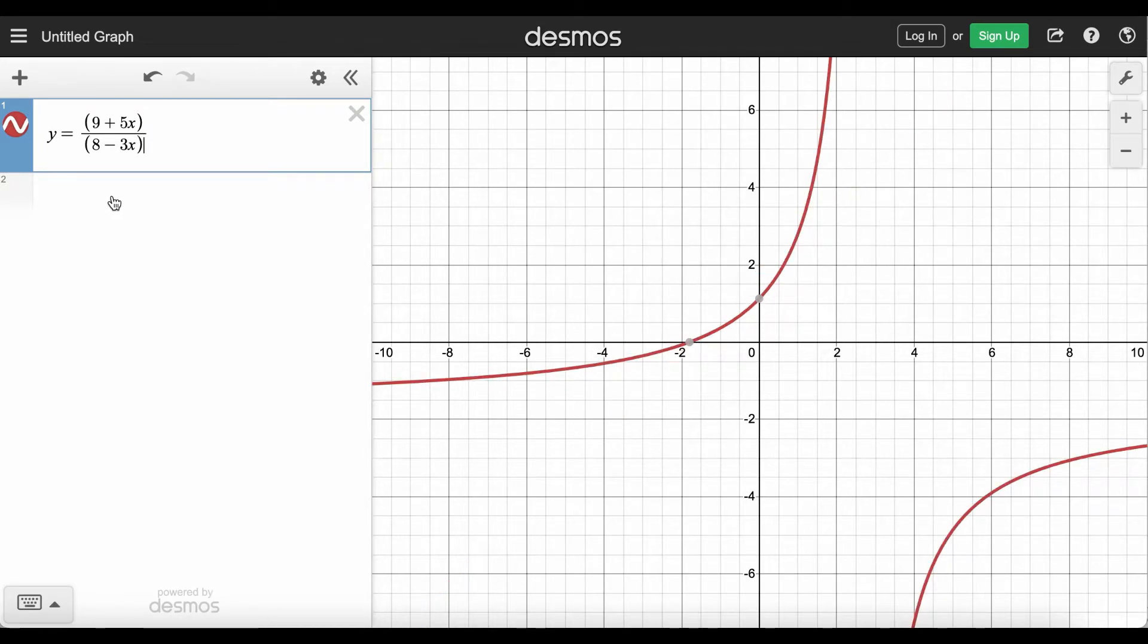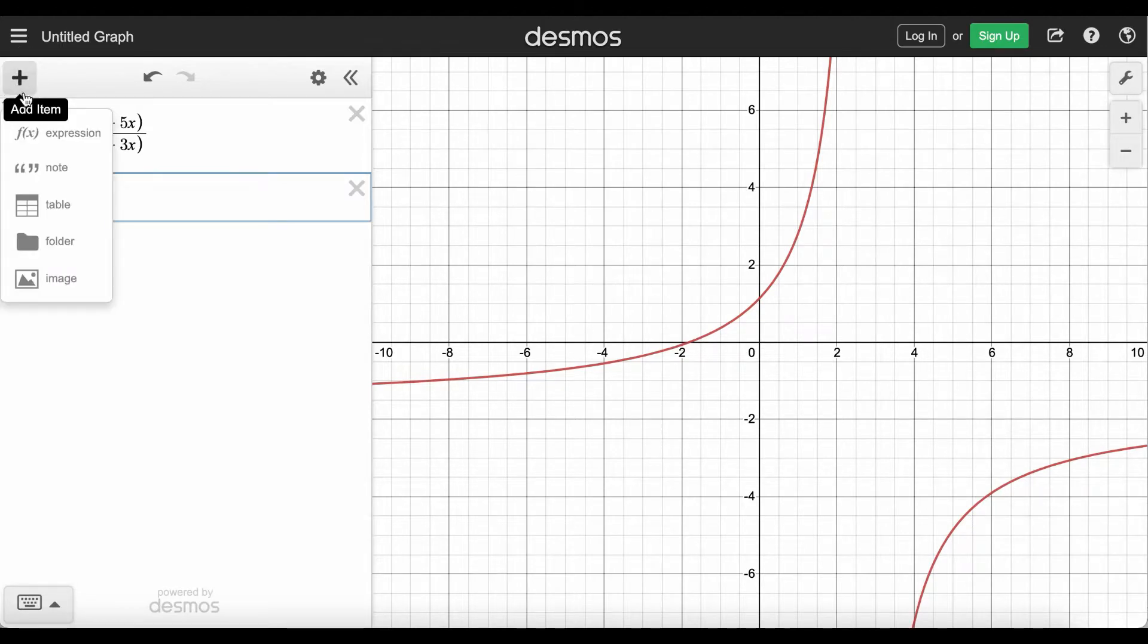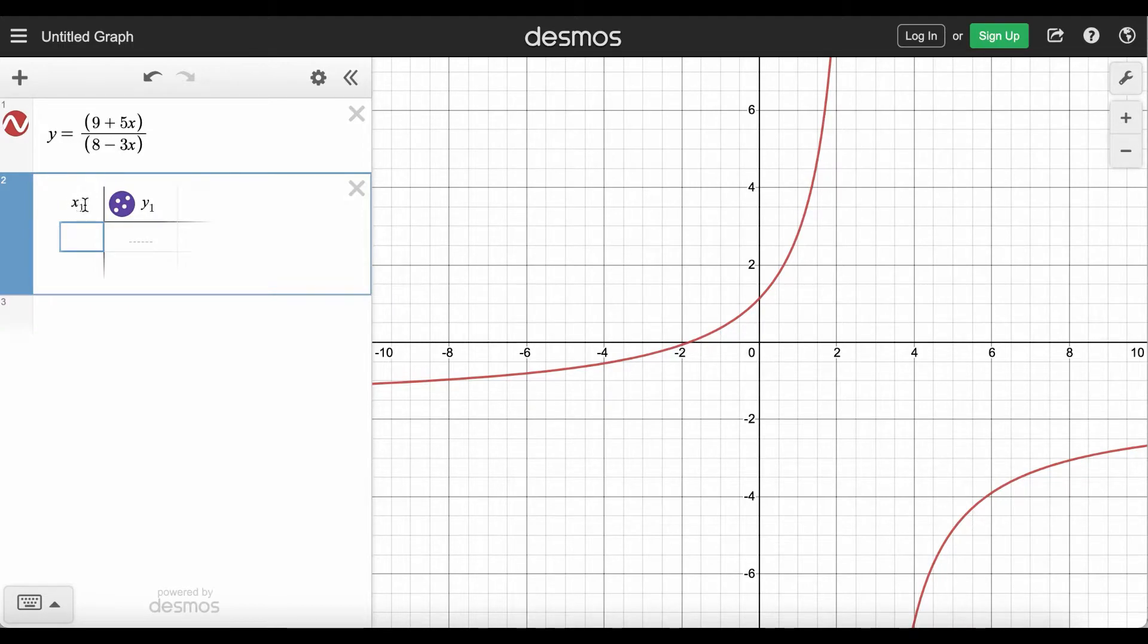Now to create the input-output table for this function I click on the next line in Desmos, click on this add item symbol the plus sign, choose table. So x sub 1 are going to be our inputs and our outputs will be y sub 1, but we want to enter our function here so I'm going to click where the y sub 1 is and delete everything in the output column.